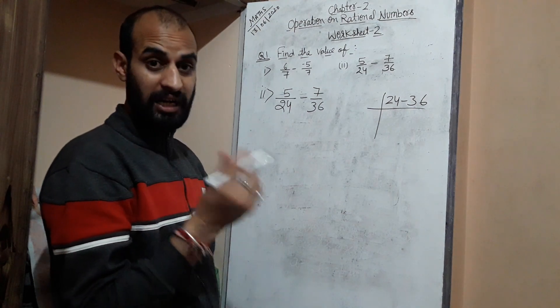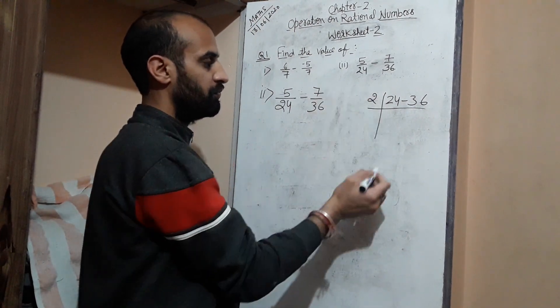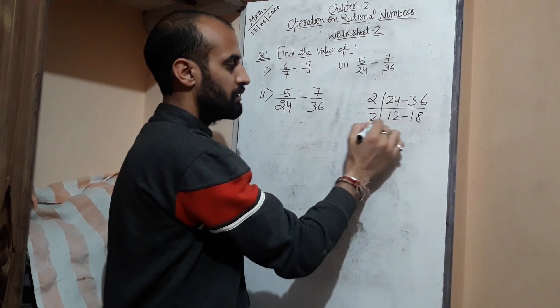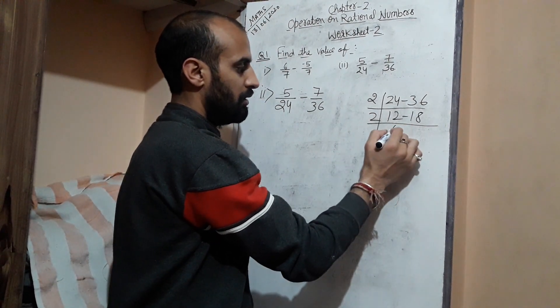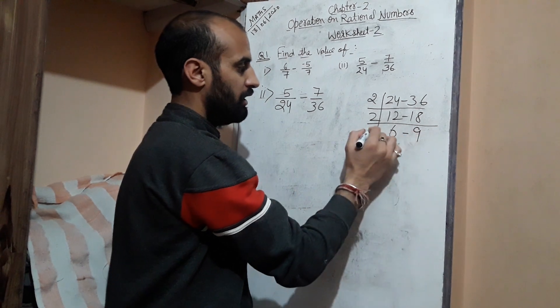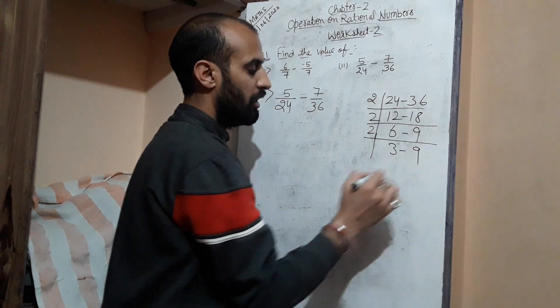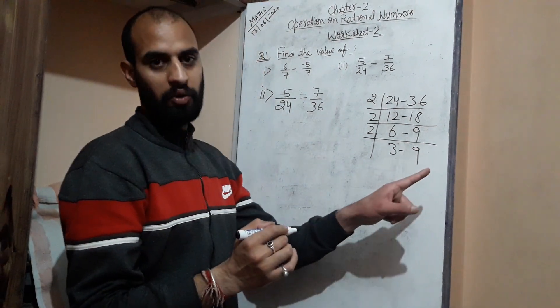How to take LCM? That I have shared with you. Start with the least prime number, that is 2: 12→6, 24→12, 36→18. Once again I can do with 2: 6→3, 12→6, 18→9.